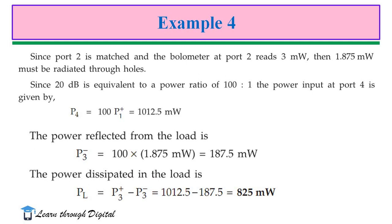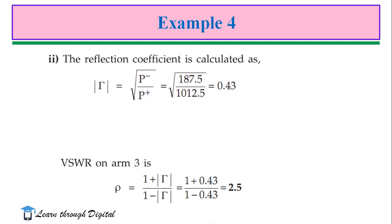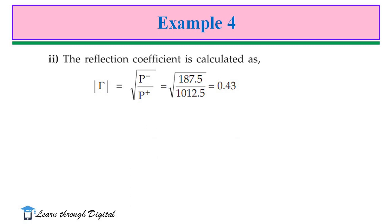The power dissipated in the load is 825 mW. The reflection coefficient is calculated by substituting the reflected and incident power: rho = P− / P+ = 0.43. From this, VSWR = (1 + rho) / (1 - rho) = 2.5. These solved examples require basic knowledge of directional coupler and the expressions for coupling factor, return loss, and the relation between reflection coefficient and VSWR. With a solid understanding of the basics, the problems can be solved easily.